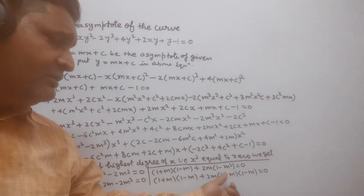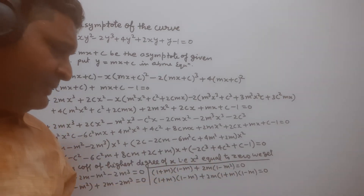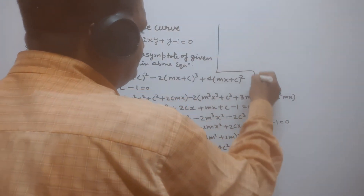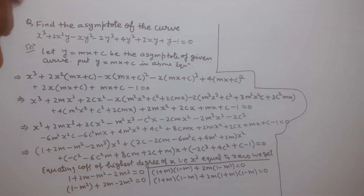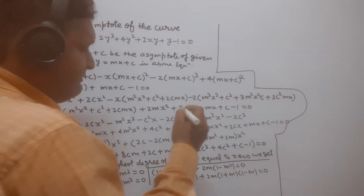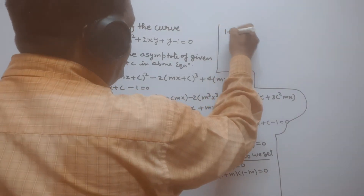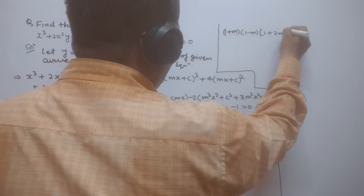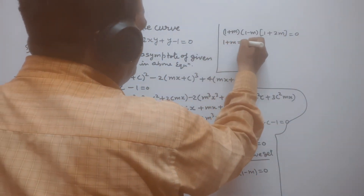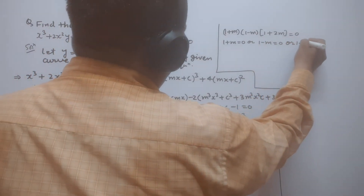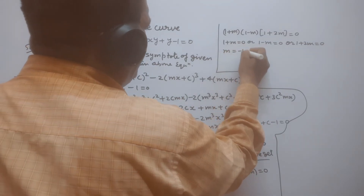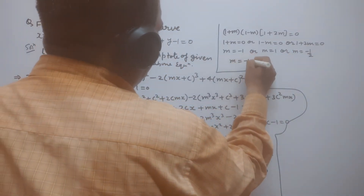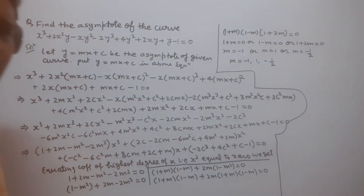Taking common factors, we get (1 + m)(1 − m)(1 + 2m) = 0. So either 1 + m = 0, or 1 − m = 0, or 1 + 2m = 0. This gives m = −1, m = 1, or m = −1/2. We get three real values of m: 1, −1, and −1/2.